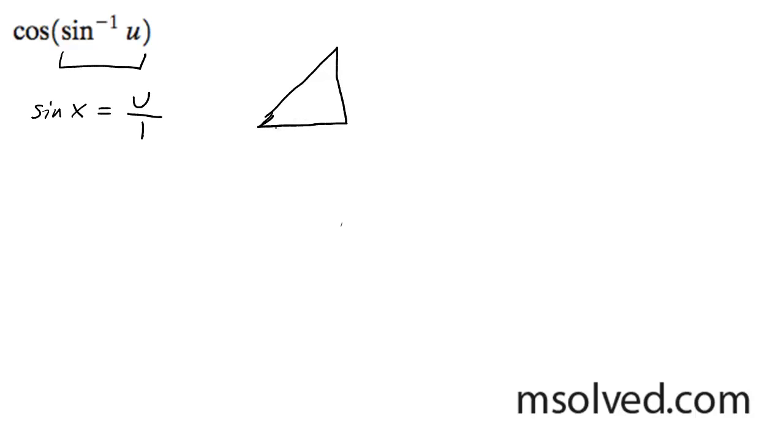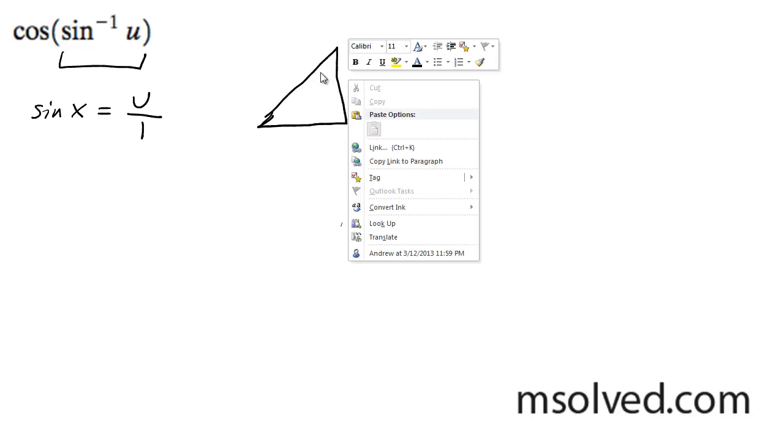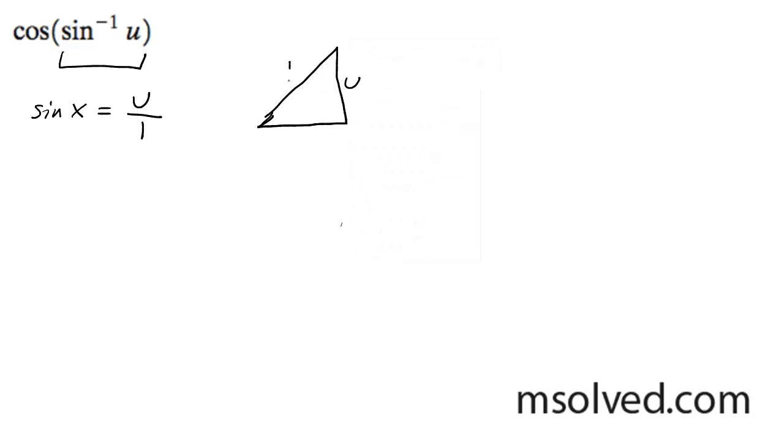We do know that it's between negative pi over 2 and pi over 2, but that doesn't really matter. I just know it's going to be in quadrant 1. It's opposite over hypotenuse for sine. So we're going to have that triangle to work with here.